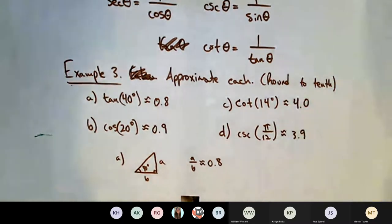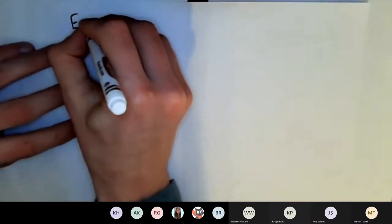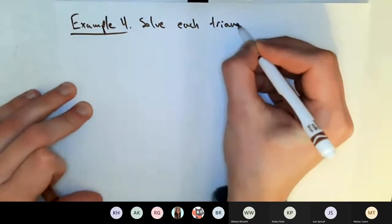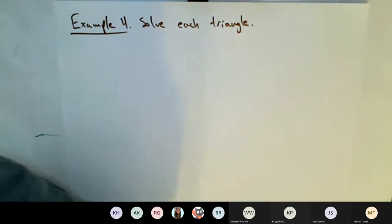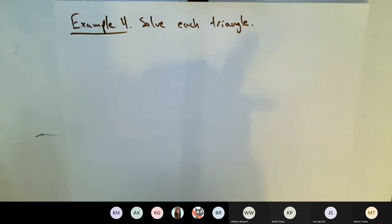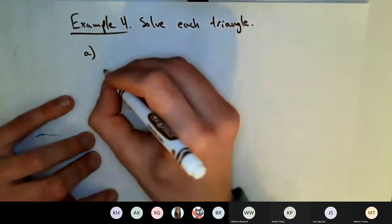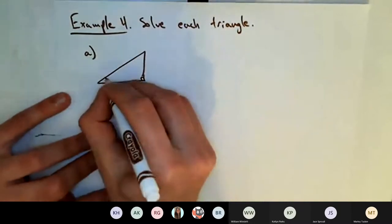Let's apply these and our special angles to solving some triangles. When a problem tells you to solve a triangle, that means find all of the missing sides and angles. Usually finding the missing angle won't be tough because these will be right triangles. The main point is finding the missing sides.